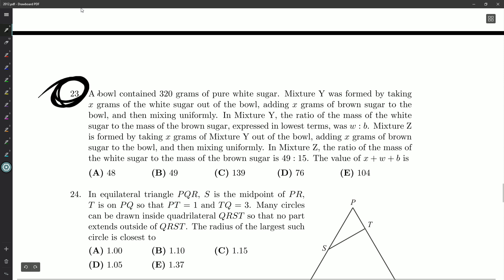Alright, a bowl contained 320 grams of pure white sugar. Mixture Y was formed by taking X grams of the white sugar out of the bowl and adding X grams of brown sugar to the bowl, and then mixing uniformly. So each gram of our mixture Y contains the same amount of brown as any other gram, the same amount of white as any other gram.